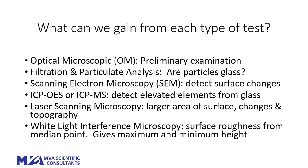Scanning electron microscopy helps us detect surface changes at higher magnification — we can see signs of pitting, delamination, or areas where the glass surface has been removed. In worst-case scenarios, you can actually see areas that look like an open clamshell where part is still attached to the glass surface and part is lifting away — not yet delaminated but on its way. That would represent one of the worst-case situations.